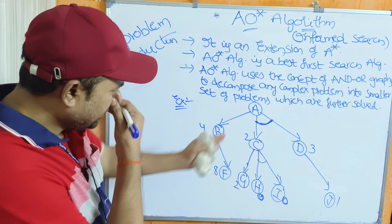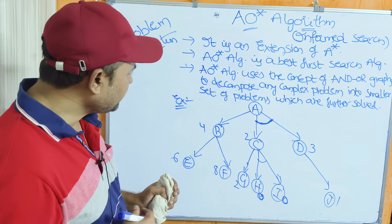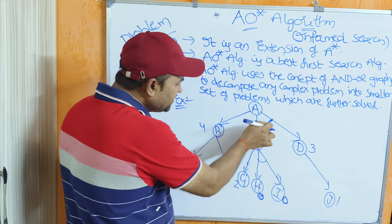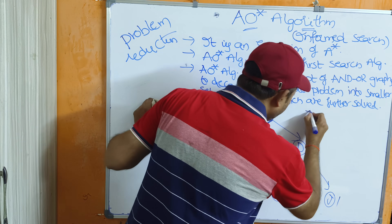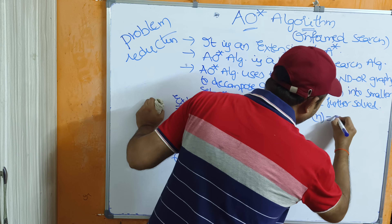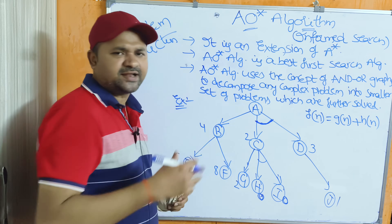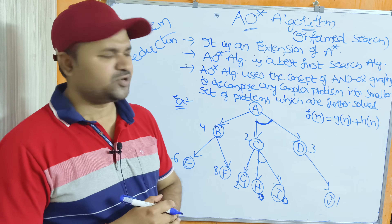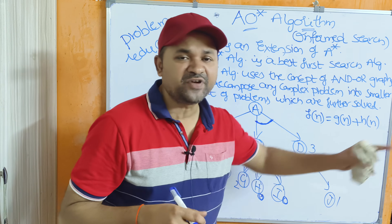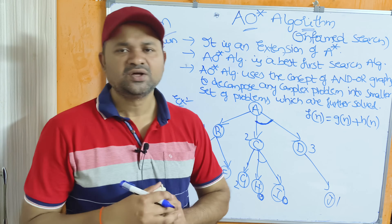Let us solve the problem. We start at the root node A. The children of A are B, C, and D. This is an OR graph, while the arc represents the AND graph. To calculate the cost, we use F(n) = G(n) + H(n), just like A* algorithm. G(n) is the cost from the initial node to the current node, and H(n) is the heuristic function — the cost from the current node to the goal node.